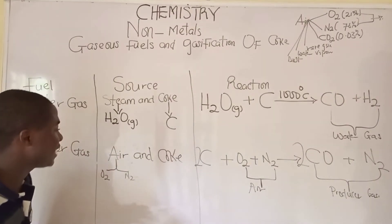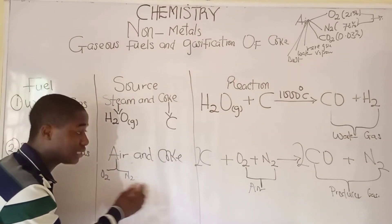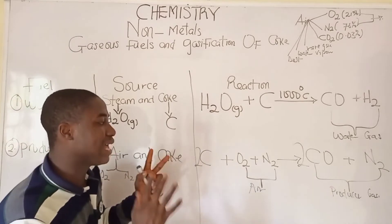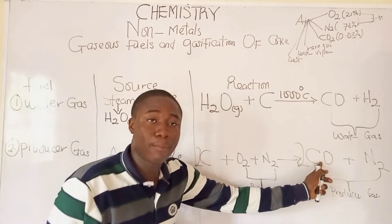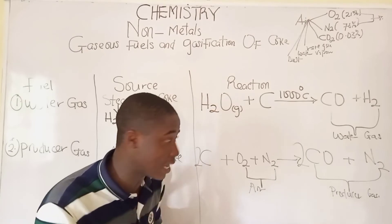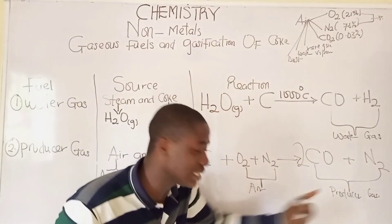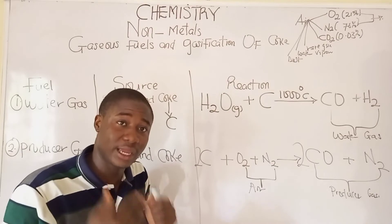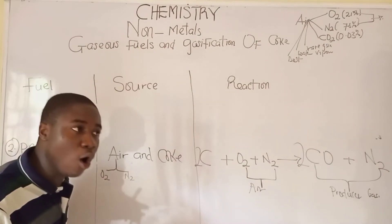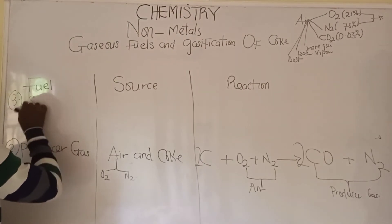To summarize: producer gas is formed by a stream of air containing oxygen and nitrogen reacting with coke, giving carbon monoxide and nitrogen gas. This is another example of a gaseous fuel.